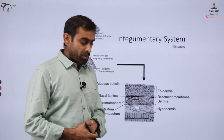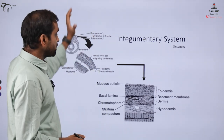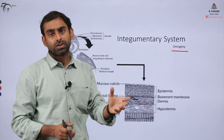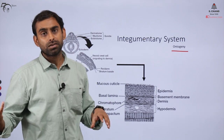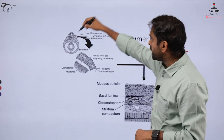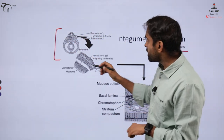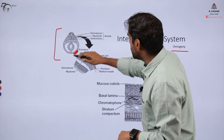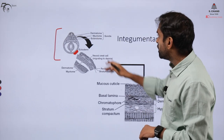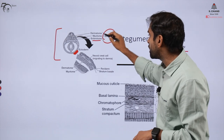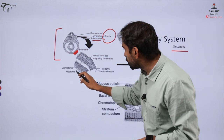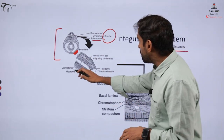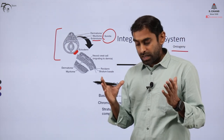Coming to the detailed anatomy of the integumentary system along with its ontogeny: as I told you, ontogeny and phylogeny are closely related — whenever we talk about ontogeny, we are getting evidence of phylogeny. The integumentary system originates from two embryonic layers. A basic embryo has an outer layer called ectoderm, and inside, specialized regions called dermatome, myotome, and sclerotome, which collectively make somites. Out of these, the dermatome leads to the formation of skin cells or the integumentary system.